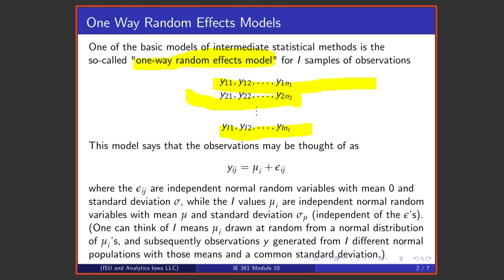One can write this in equation terms to say that all the observations in sample i are built from mean μᵢ plus mean zero standard deviation σ normal random variation. You can think of some number of means μᵢ drawn at random from a normal distribution of means